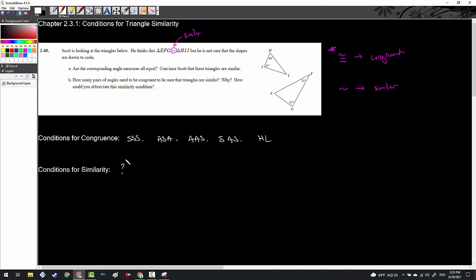It says, are all corresponding measures equal? Convince Scott that the triangles are similar. Here's the thing: we know that the angles of a triangle add up to 180 degrees. So if we look at triangle HIJ, we can look at his angles and say 68 plus 87 plus X should be 180. We've got 68 plus 87, which is going to be 155 plus X being 180. If I subtract 155 from either side, I'm going to get X equals 25, which we should have seen coming because of the 25 here in angle F.